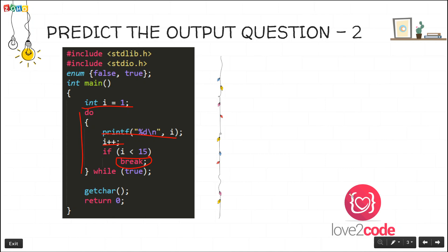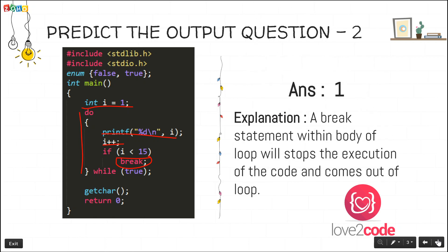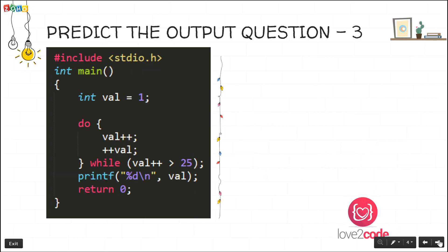Whenever a compiler encounters a break statement, it stops the execution of the loop and comes out of the loop. The expected output is the same as the previous one — 1. The explanation is: whenever a break statement within the body of a loop is found, it stops execution and exits the loop entirely.